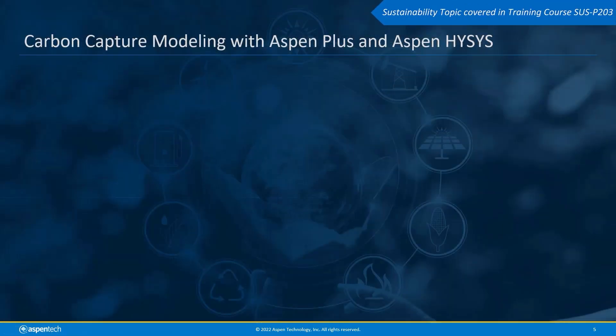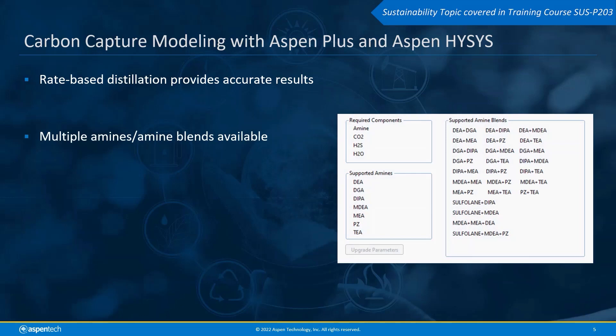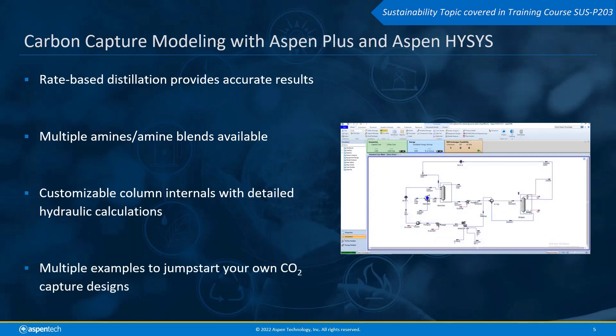Aspen Plus and Aspen HYSYS offer a high-fidelity, more realistic modeling approach to accurately predict CO2 capture systems. A wide variety of chemical and physical solvents are available for users to model, and detailed hydraulic calculations make it easy to evaluate column performance. The examples offered within Aspen Plus and Aspen HYSYS can be used to jumpstart your own carbon capture designs. For more information on AspenTech's carbon capture models, go to the website listed in the description below.